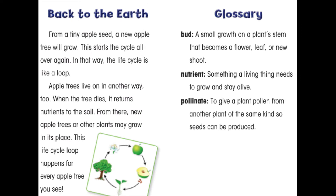Some apples drop to the ground and rot leaving seeds behind. From a tiny apple seed a new apple tree will grow. This starts the life cycle all over again. In that way the life cycle is like a loop. Apple trees live on in another way too. When the tree dies it returns nutrients to the soil. From there new apple trees or other plants may grow in its place. This life cycle loop happens for every apple tree you see.